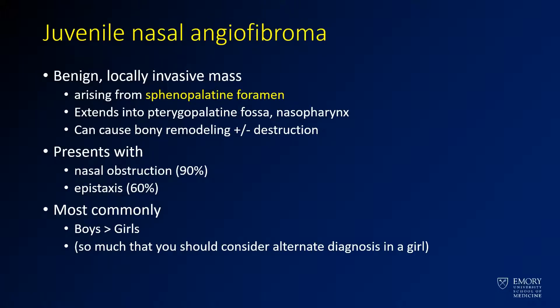This is a case of juvenile nasal angiofibroma. This is a benign, locally invasive mass which arises from the sphenopalatine foramen. It can extend into adjacent structures, including the pterygopalatine fossa and the nasopharynx — as seen in this case, where the vast majority of the mass was in the nasopharynx. You can get bony remodeling with or without bony destruction, and the vast majority of patients will have nasal obstruction and epistaxis, which was the case for this patient.